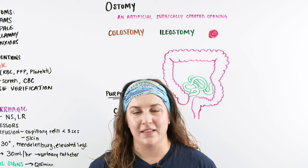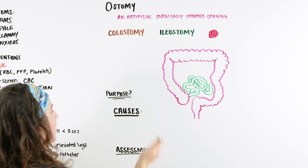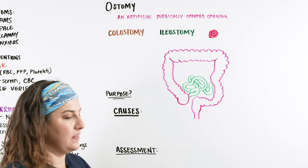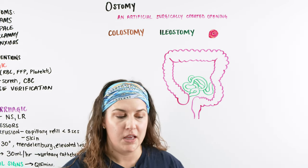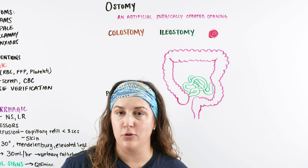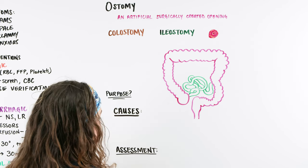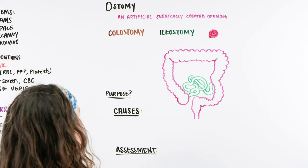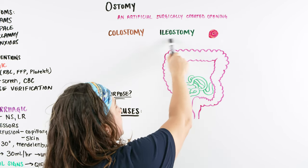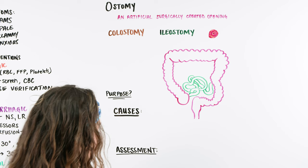When we talk about ostomy, an ostomy is an artificially surgically created opening — meaning there is no opening in this area and we are going to create one in order to help out our body. When we do this, we are typically taking either our colon to create a colostomy or our ileum to create an ileostomy.